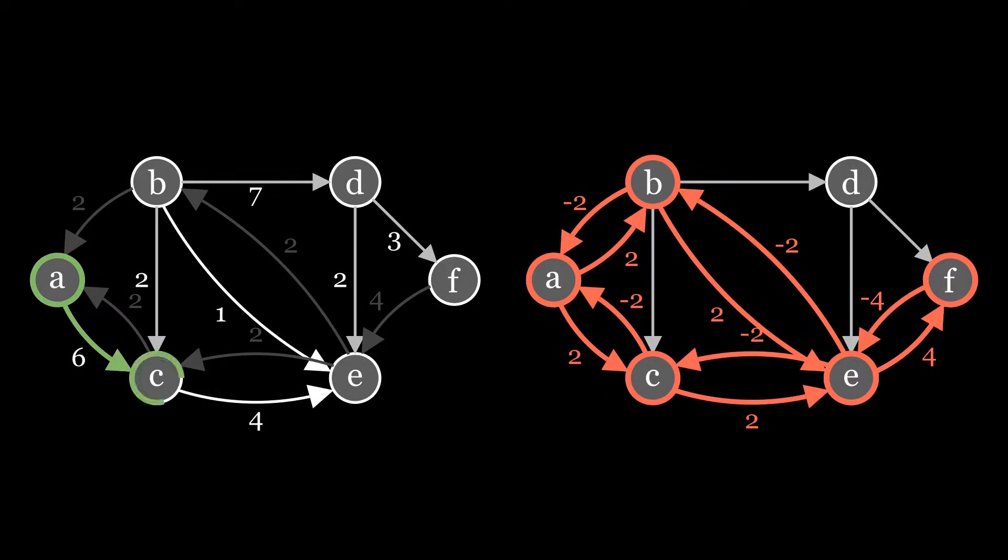Now we can see that there is a path that before was not available. The backward edge from E to B allows us to undo the bad choice that we made in the first step.